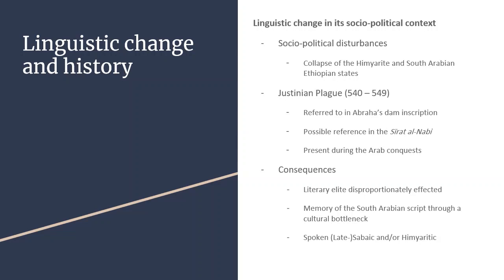But beyond some scattered manuscriptal and inscriptional evidence, as well as the occasional reference in medieval accounts, it seems that the Sabaic language itself had disappeared very swiftly. At the very least, we should consider the question: how is it possible that the state model, script, and language introduced by the Sabaeans — which had originated 1,500 years earlier and was continued by the Himyarites and then appropriated by the Ethiopians — vanished so quickly? I will propose an answer in the following part.